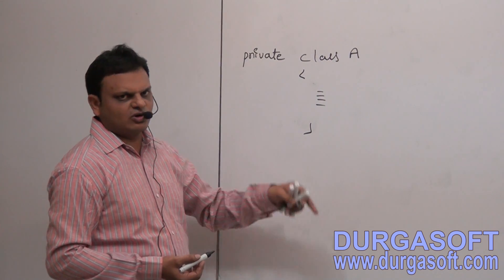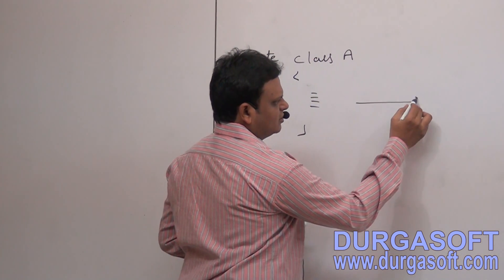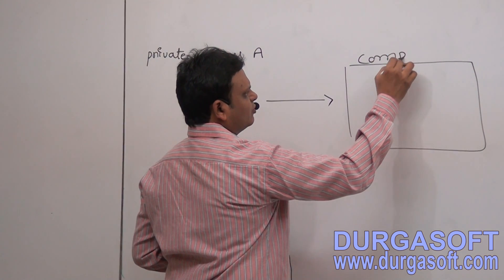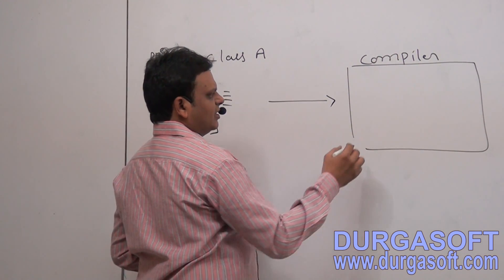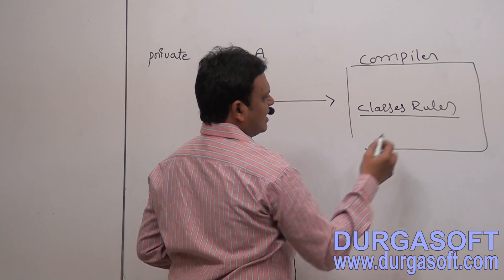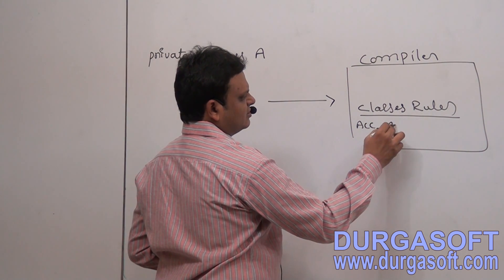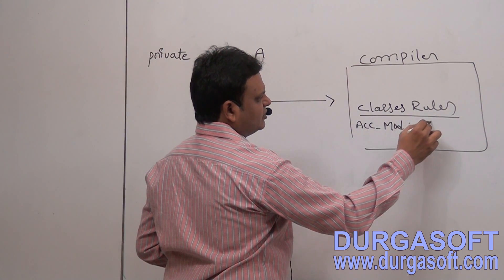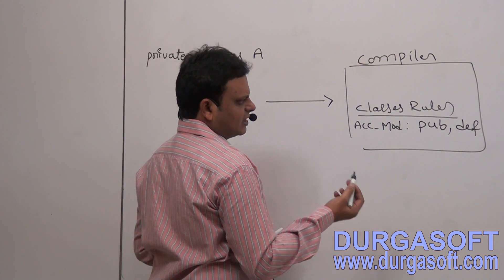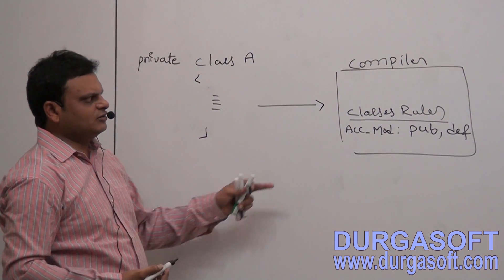Here, private modifier is not allowed for classes. How does the compiler know that the class is declared with private, and how does it say private is not allowed? Think about it — when we give this file to the compiler, inside the compiler a set of rules and regulations are available for classes. Under these class rules, for access modifiers, only public and default are allowed, while private and protected are not allowed.